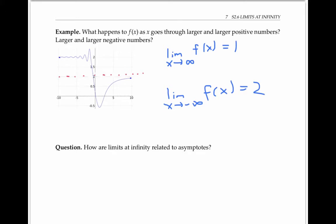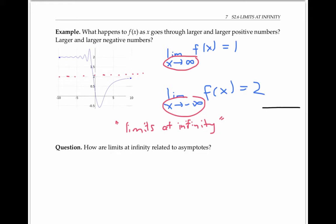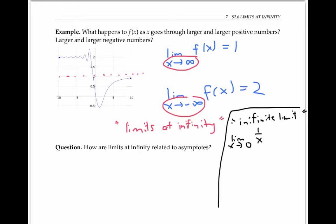Limits in which x goes to positive infinity or negative infinity are called limits at infinity. This terminology should be contrasted with the terminology 'infinite limits,' which is a limit that has a value of infinity — like the limit as x goes to zero of one over x squared, which has a value of infinity. So these two expressions do not mean the same thing.